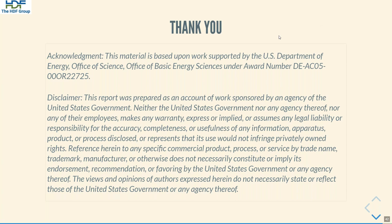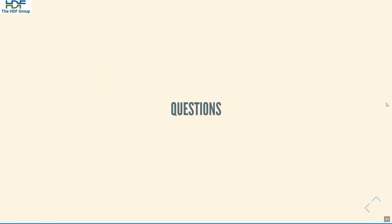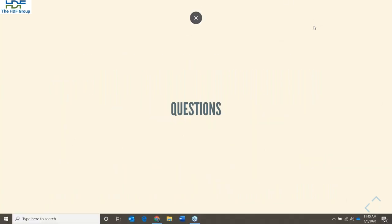I think we are into questions now. I'm Lori Cooper and I will facilitate a couple of questions. A quick note: someone asked about the slides — they are already posted on the forum at forum.hdfgroup.org, so you'll be able to access those and get some of the links. For running in parallel, do you need to do a custom install of HDF5, or do pre-built binary distributions already have that capability enabled?